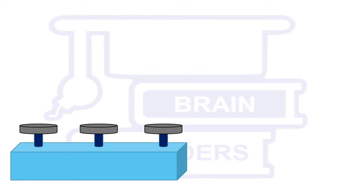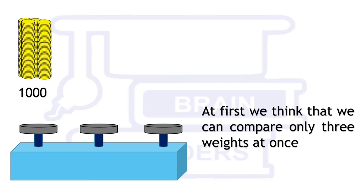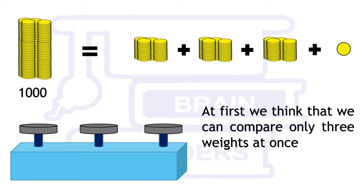So here is our solution. Since there are three pans in the weighing balance, at first our brain starts thinking that we can compare only three things at once.